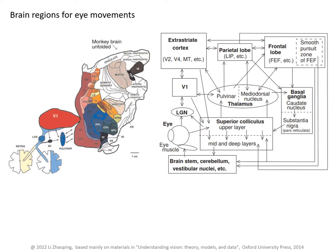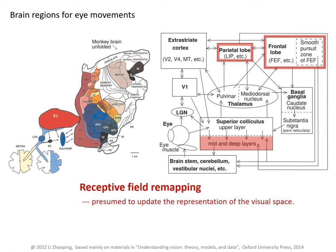Slightly before saccades, neurons in LIP, the frontal eye field, and in the deeper layers of the superior colliculus shift their receptive fields such that they respond to visual inputs that are about to be brought into their classical receptive fields by the impending saccade. This is called receptive field remapping, and it presumably serves to update the representation of visual space that is shifted by the saccade. Some neurons in extrastriate cortex also show some remapping behavior.